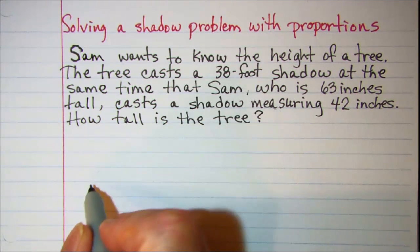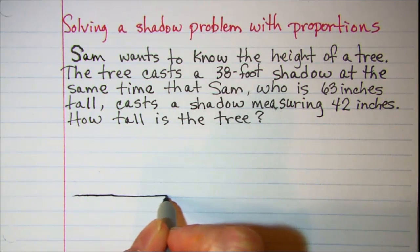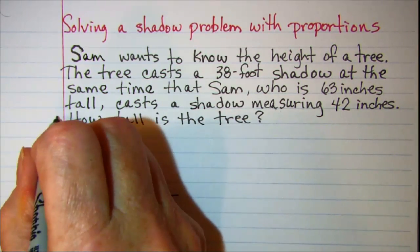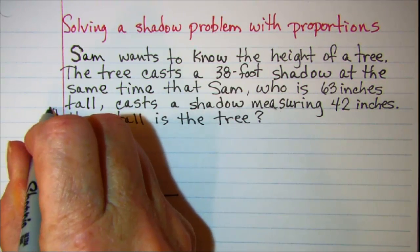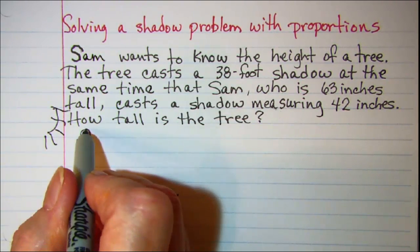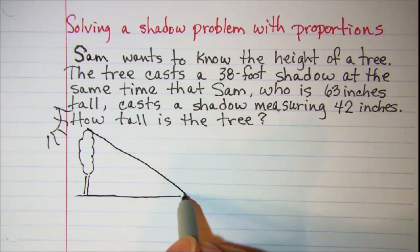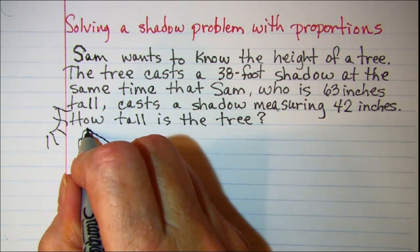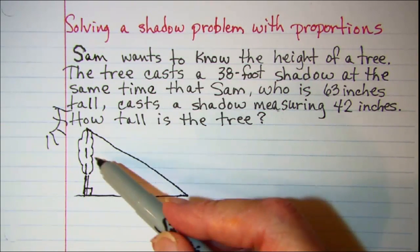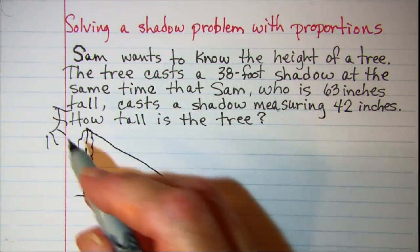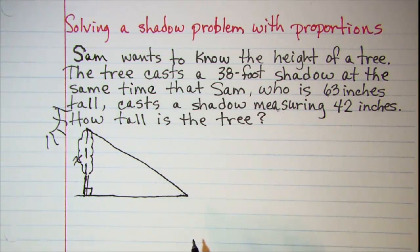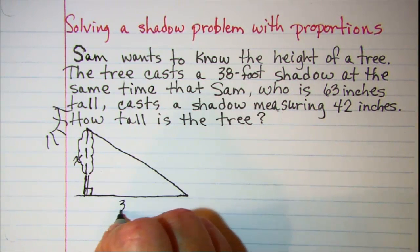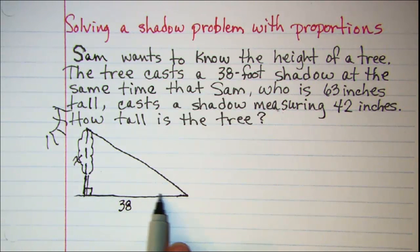Now let's go ahead and draw a sketch of our problem. We have a tree and we have sunshine and our tree is casting a shadow. Now we're assuming the tree is at a perpendicular here. So this is our tree and we want to know how tall that is. So we'll go ahead and mark that with the variable X. But we know that the tree's shadow is 38 feet. So we can put 38 here on this measurement of the triangle.